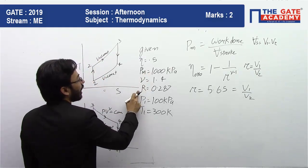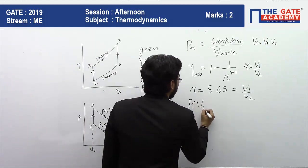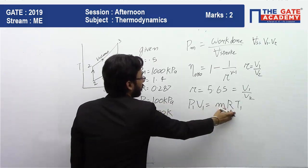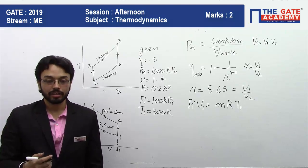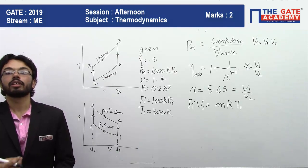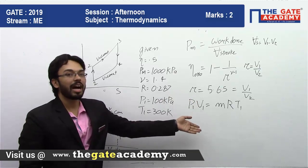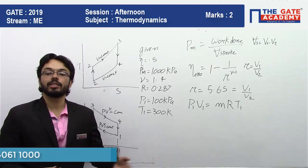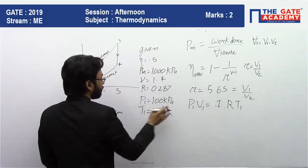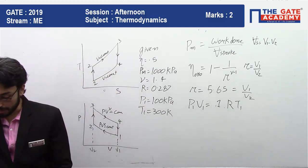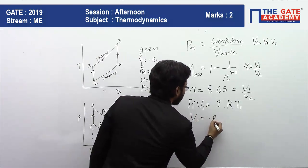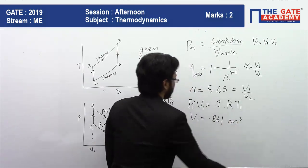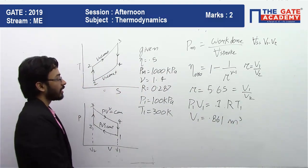To resolve the two unknowns, we apply the ideal gas equation: P1 V1 = m R T1. The values of T1, P1, and R are all given. Since the question asks for specific work in kJ per kg, we take mass m = 1 kg. Substituting P1 = 100 kPa and T1 = 300 K gives V1 = 0.861 m³.